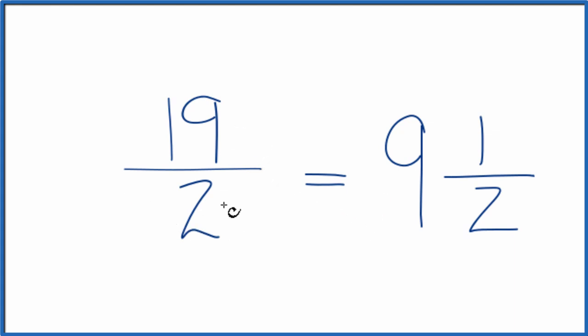So in answer to our original question, 19 over 2 as a fraction, it's already simplified. But you could convert it to a mixed number if you wanted, and that would be 9 and 1 half. This is Dr. B. Thanks for watchin'.